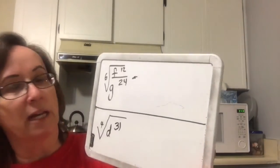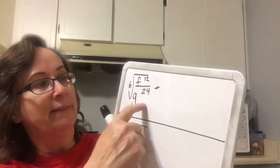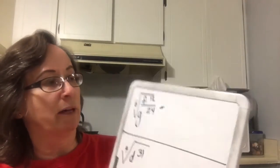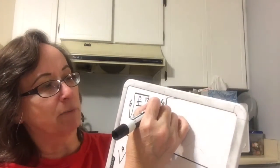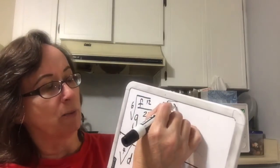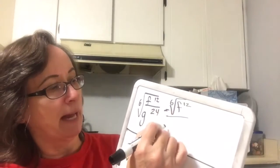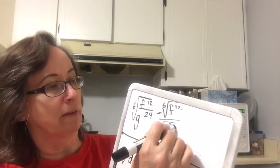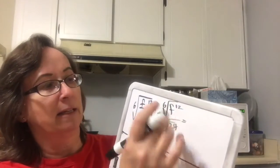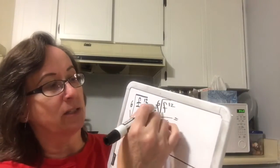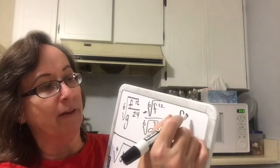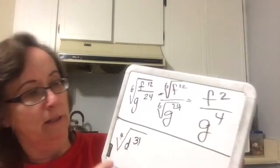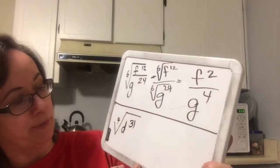Now we're talking about our quotient rule. There is no benefit to having these together in one radical, so we would break this apart: 6th root of f to the 12th divided by 6th root of g to the 24th. Since 12 divided by 6 is 2, that would come out of the radical as f squared. And g to the 24th would come out of the radical as g to the 4th. And that would be simplified.